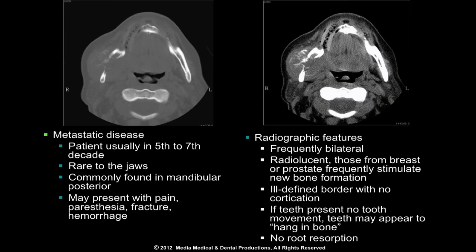If untreated or unrecognized until late in development, this condition is often fatal. Metastatic disease in the jaw is relatively rare. It is most often found in the mandibular posterior in patients in their 5th to 7th decade of life. Lesions are frequently bilateral. Patients may present with pain, paresthesia, pathologic fracture, or hemorrhage from the site.